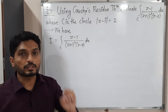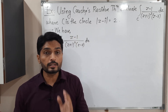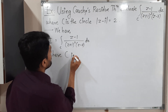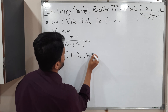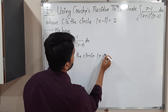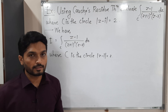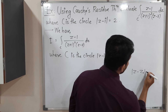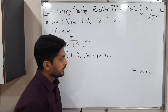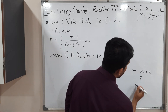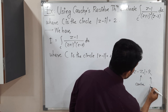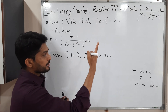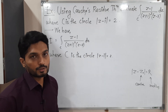The curve C is the most important thing for us. So let us draw the curve C. C is the circle where mod(z minus i) is equal to 2. So we have to draw this circle first. The standard equation of a circle is mod(z minus z-naught) equals R, where z-naught is the center and R is the radius.